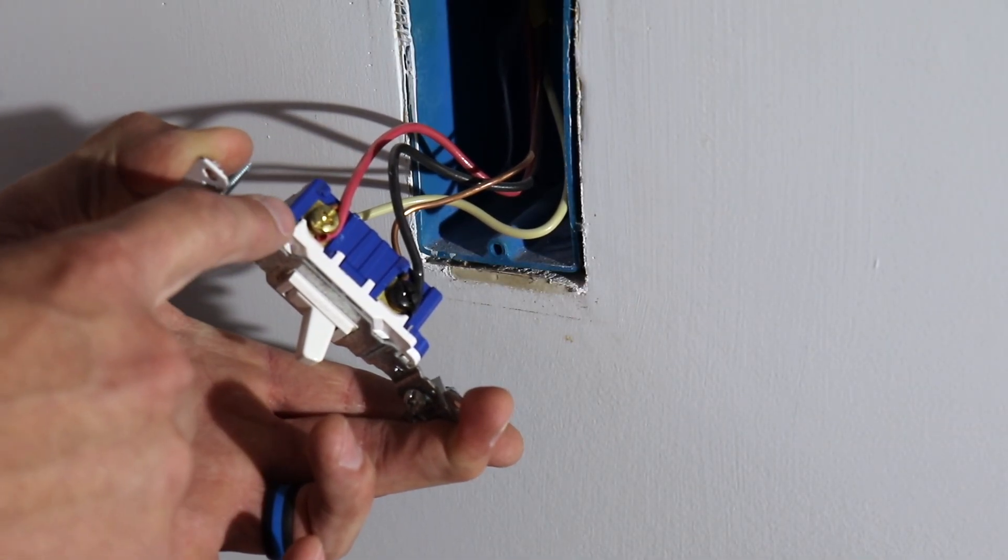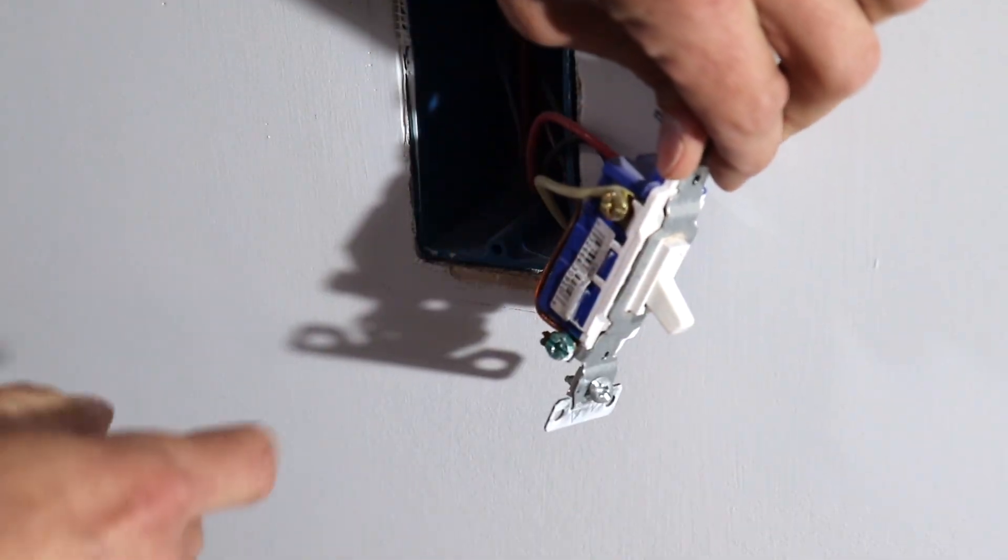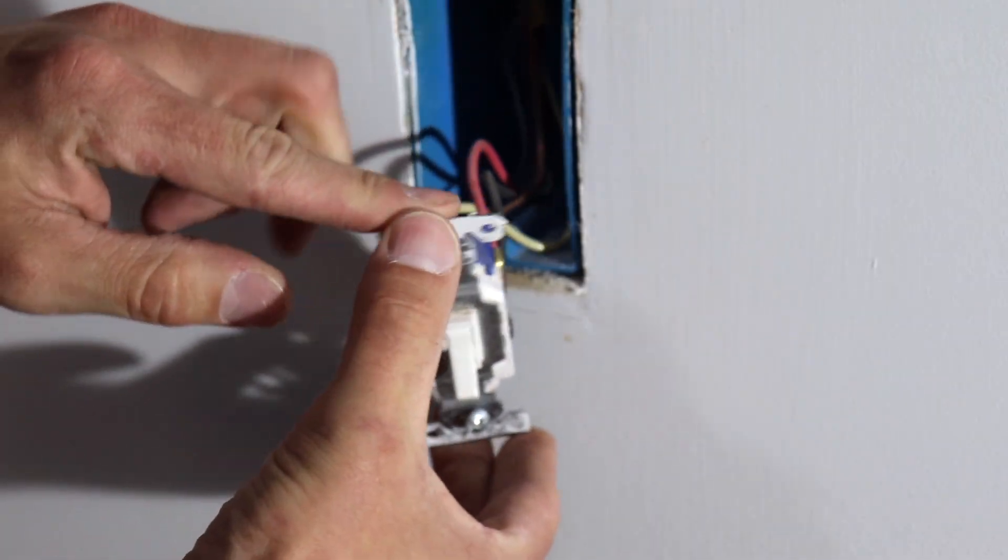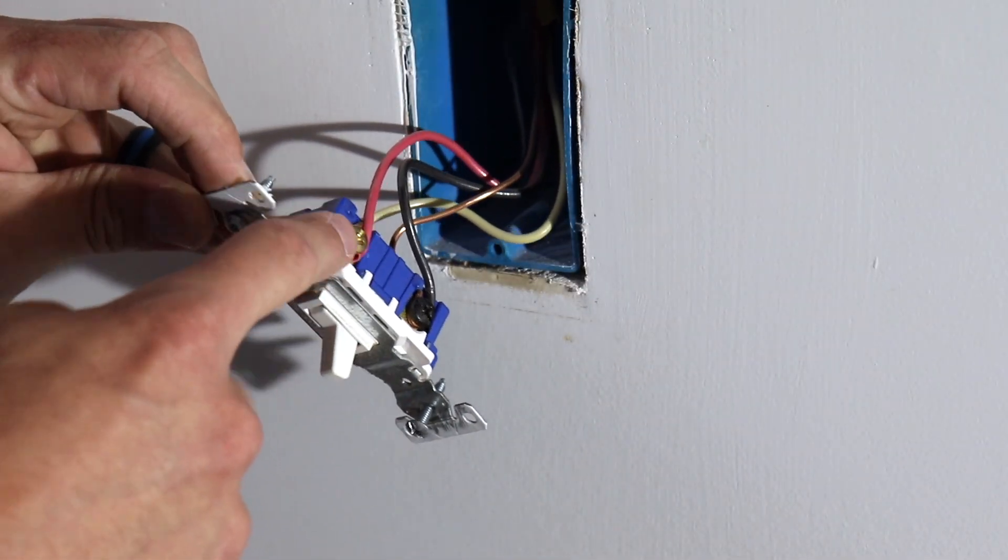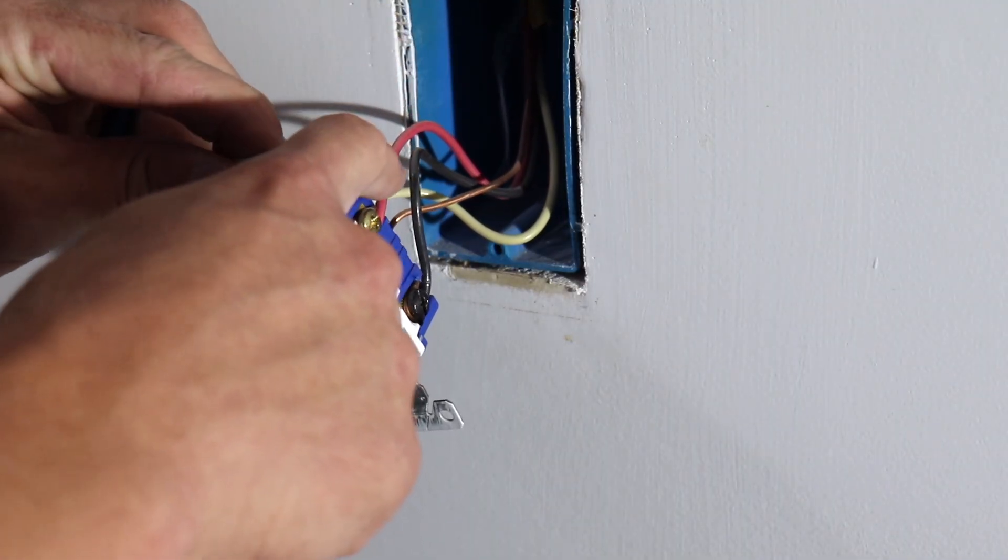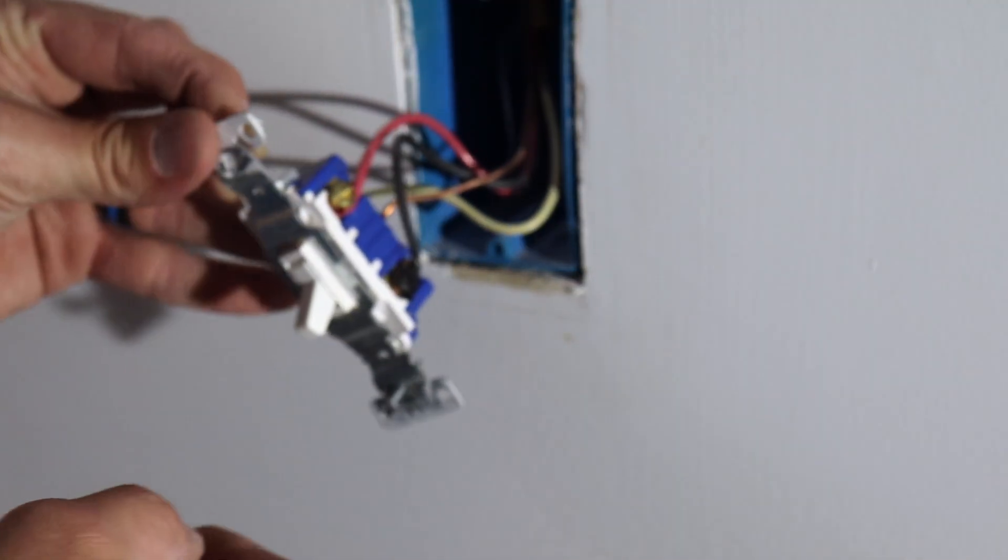We have a red wire going to this brass terminal on this side. Now on this side of the switch, we have a white wire going to this brass terminal. These top two that are connected to the brass terminals are called your traveler wires. So these just provide power to and from both of the three-way switches.